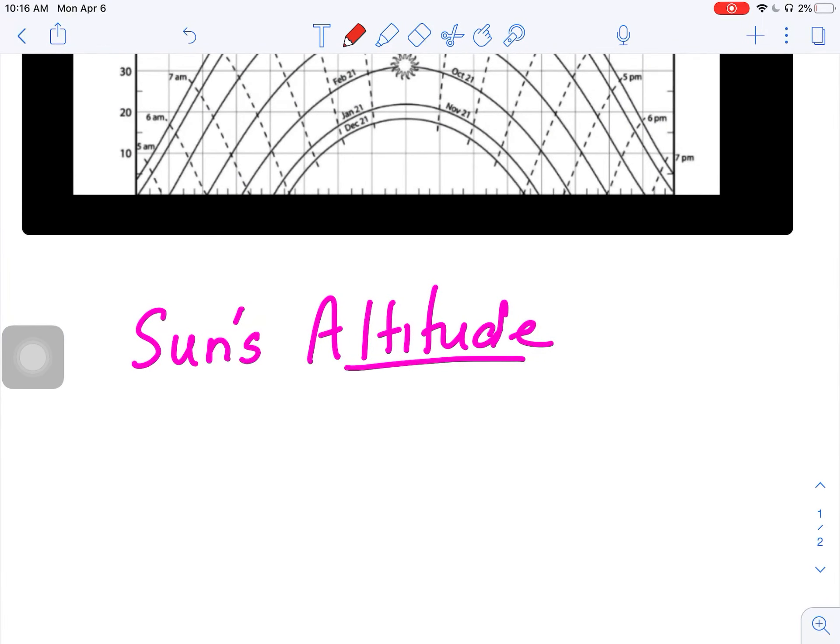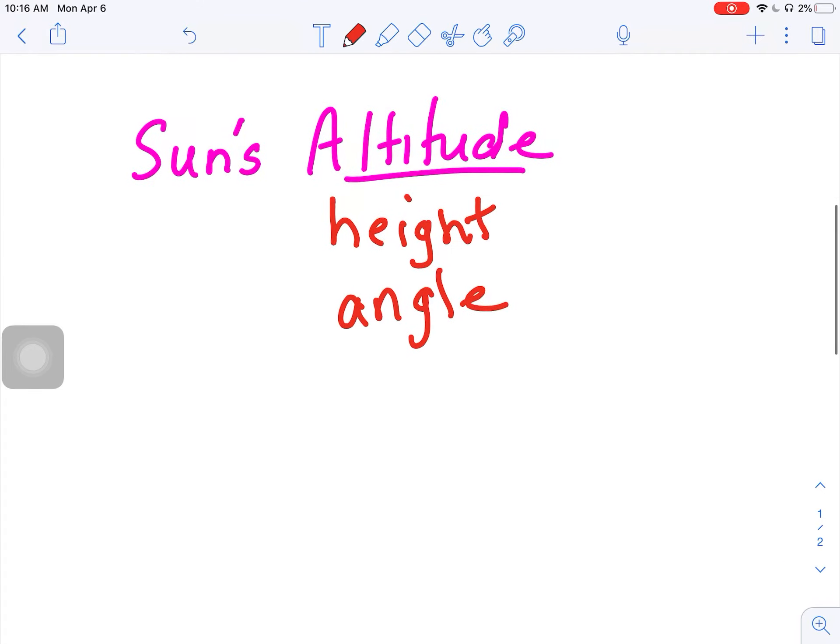Okay, today we're talking about the sun's altitude, which is the same thing as the sun's height in the sky and also the sun's angle. When we talk about this, we're talking about when you're standing on Earth at different times of the year or at different locations. So this is one time of the year, here's another time of the year. The sun is not always at the same angle or altitude in the sky.